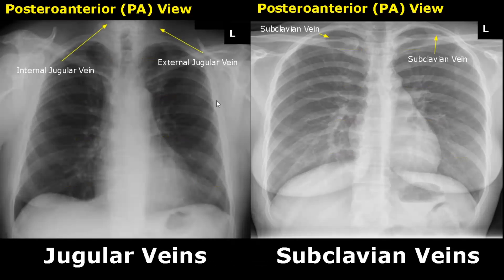These are the locations of the jugular veins. The internal jugular vein will be deeper in the neck and the external jugular vein will be superficial.